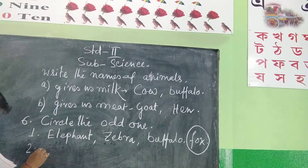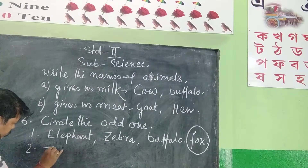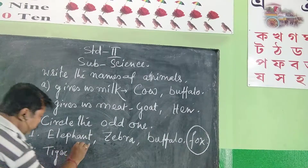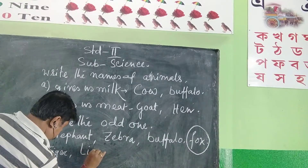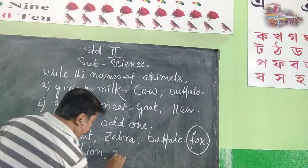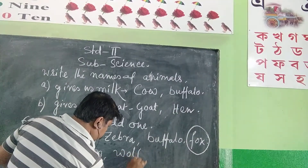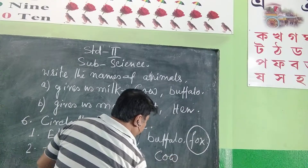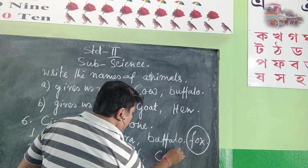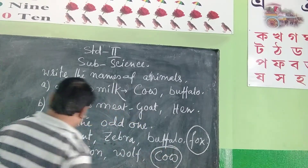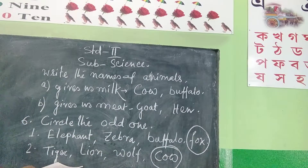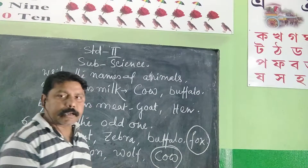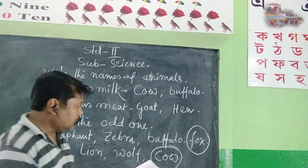Number two: Tiger, lion, old, and cow. Odd one — shark and cow. This is a wild animal, wild animal, and wild animal. This is a domestic animal. Okay, odd one.